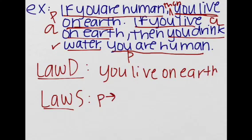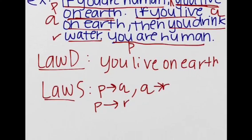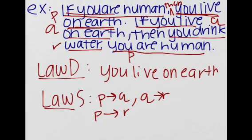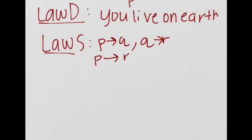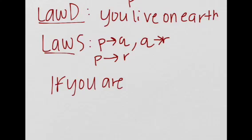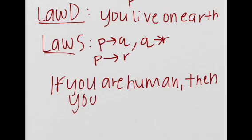So we know that p to q is true. And q to r is true. So then p to r must be true. So in this case, it would be, if you are human, then you drink water. So the law of syllogism gives us, if you are human, then you drink water.